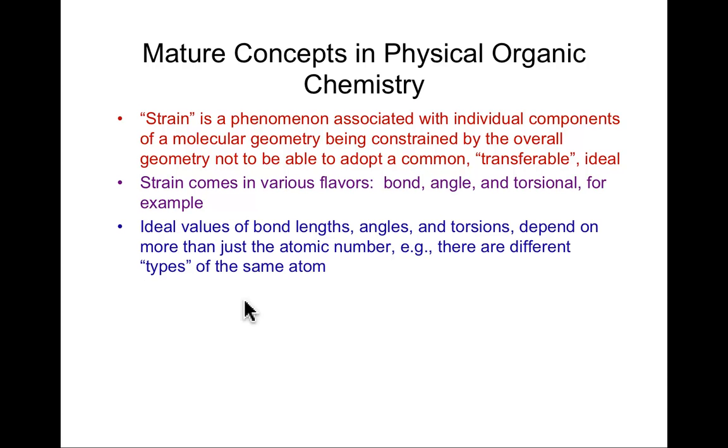Note that the ideal values associated with bond lengths, angles, and torsions actually depend on more than only the atomic number. Let me pick a carbon atom and an oxygen atom. There's many ways to have a carbon bonded to oxygen. In an ether, there is a single bond between carbon and oxygen. If you look at X-ray crystal structures for a huge number of ethers, you would find that bond is about 1.43 angstroms long. On the other hand, if you look at ketones, aldehydes - most CO double bonds are closer to about 1.23 angstroms, not 1.43 angstroms.